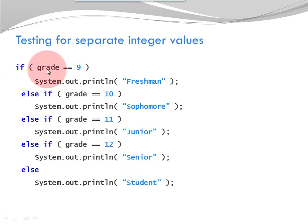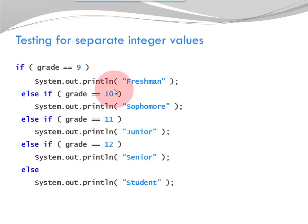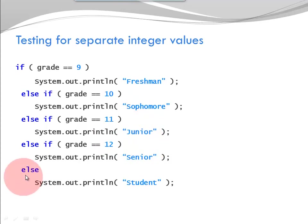Notice I have one variable — it could also be an expression or result of a method call that can take on different values. For these different cases, I have different responses. I can also have a default with a default response.